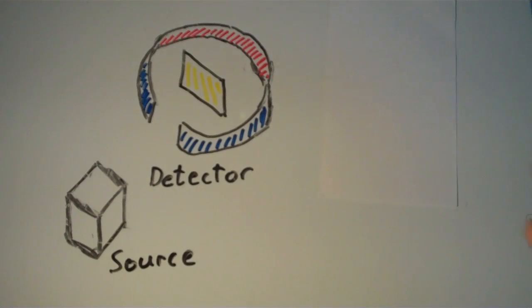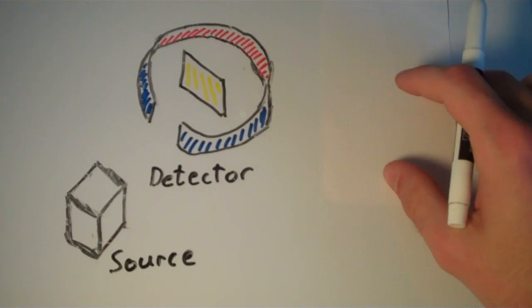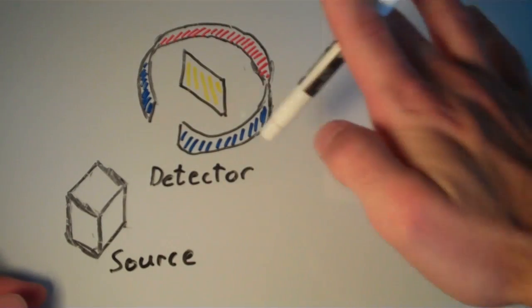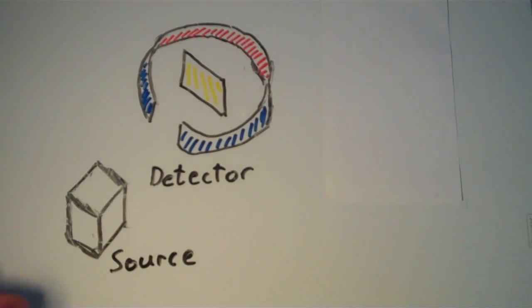So here's the basic apparatus of the experiment that Ernest Rutherford conducted. So this cube looking thing here, this is a light source. And this ring looking thing here, that's a detector.